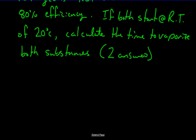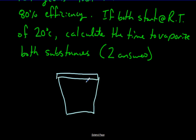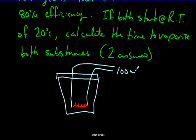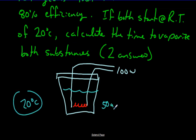What I'm describing is an insulated vessel with a heating coil running heat in at a power level of 100 watts — two of these set up, one with each liquid, both starting at 20 degrees Celsius with 50 grams of substance in each. How long will it take to boil all of it away to gas? You have the specific latent heat of vaporization and the boiling points of both liquids — what other information do you need?